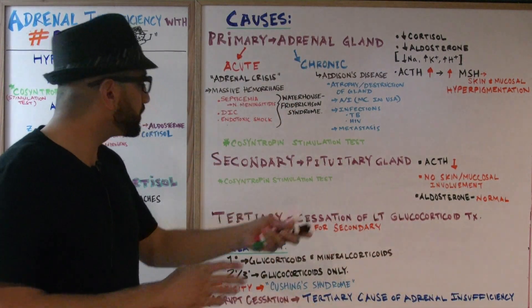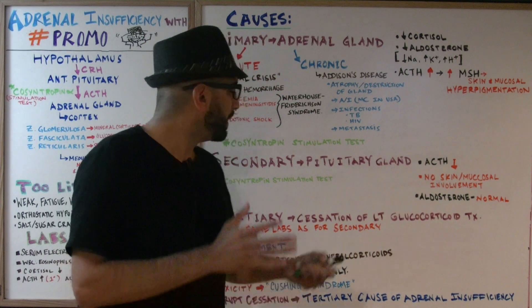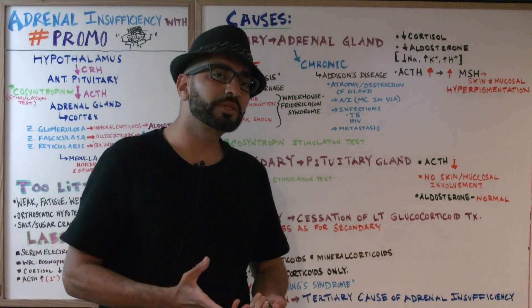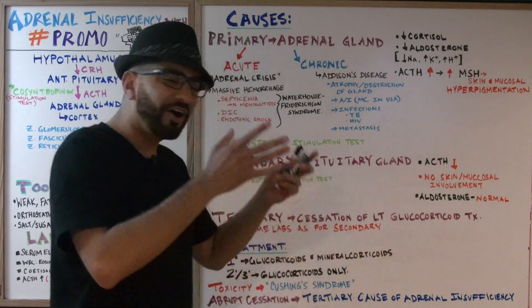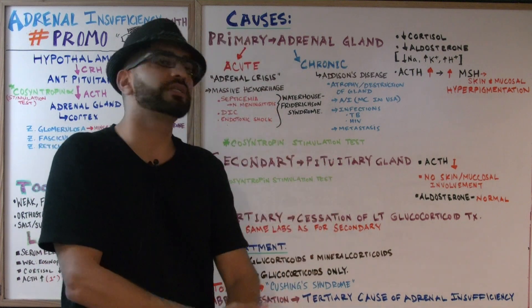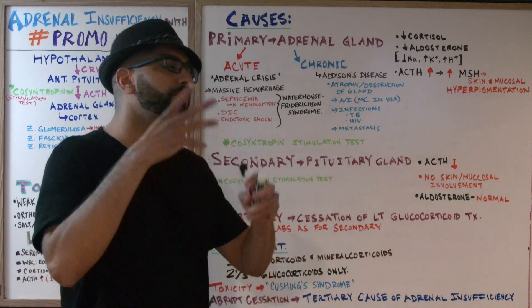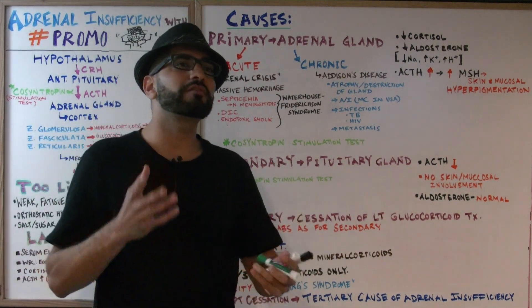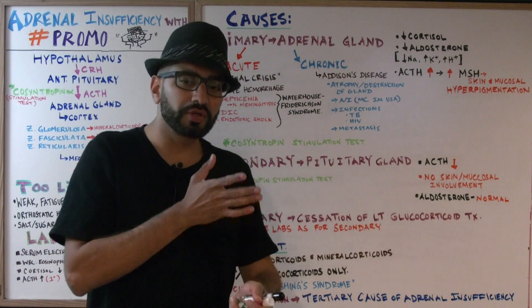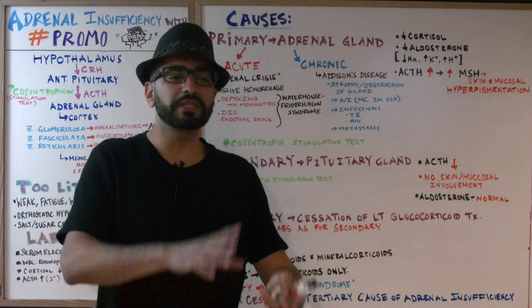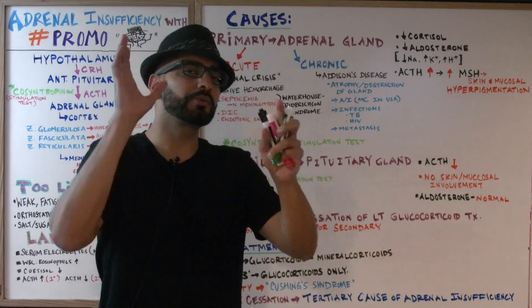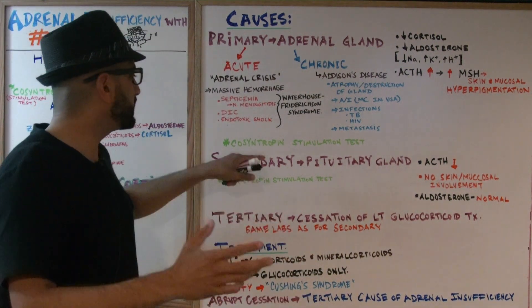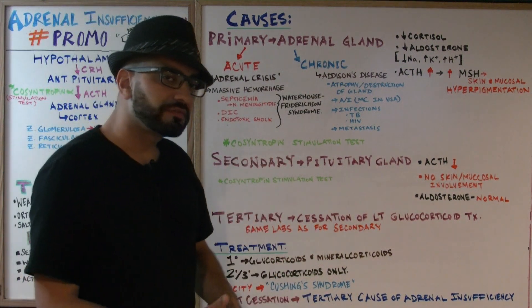The tertiary cause — think of it in terms of treatment. If a patient has been on long-term glucocorticoid therapy and you abruptly stop the medication, the patient will present with adrenal insufficiency. If you ever need to stop long-term glucocorticoid therapy, always taper it down slowly — do not abruptly stop it. The labs in tertiary adrenal insufficiency will be the same as in secondary adrenal insufficiency.